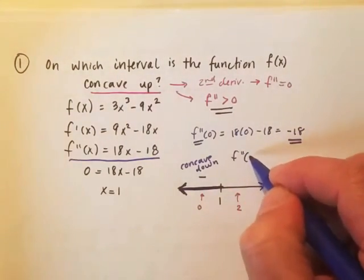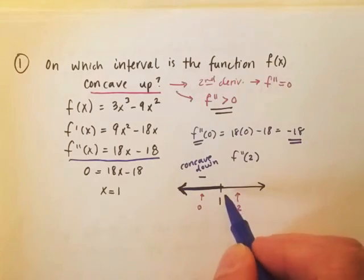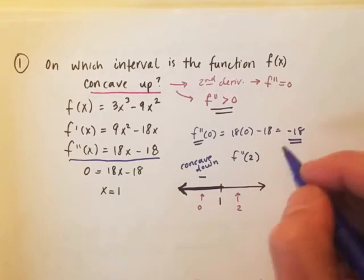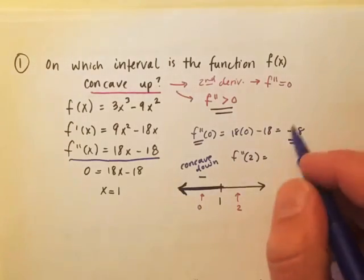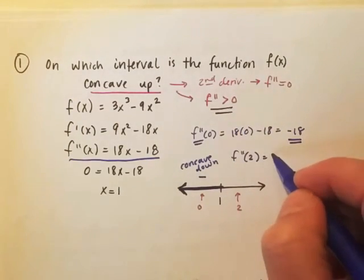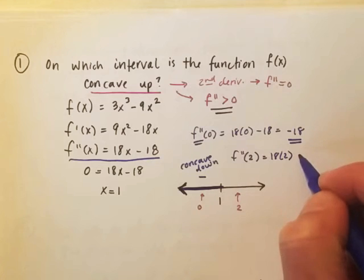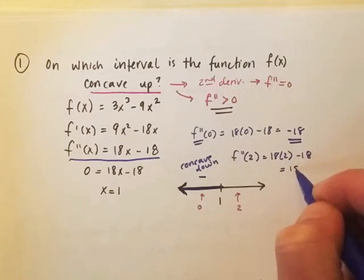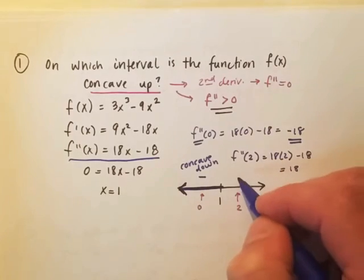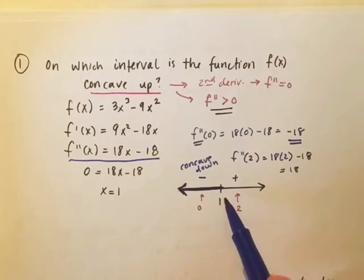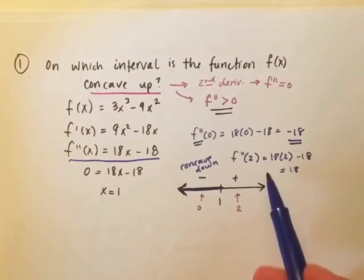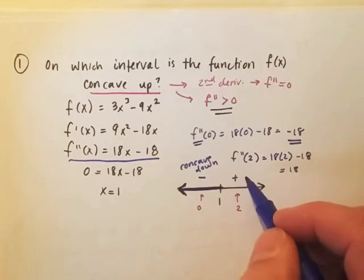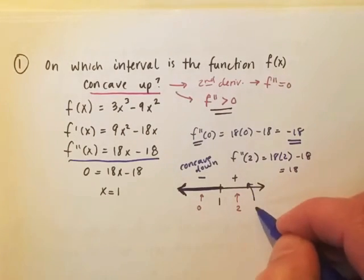Now we're going to do the same kind of thing and find f double prime for two, any number that's to the right of one. Remember that this is where it potentially changes concavity. So if we plug in two into that same function, f double prime, we get a positive 18, which we just need to know that it's positive. And that any number to the right of one, two, three, four, five, if we were to plug it in, we would get a positive number, which tells me concave up.